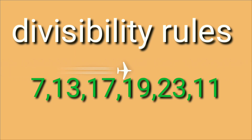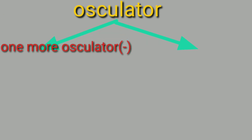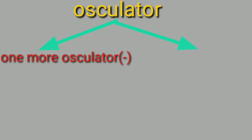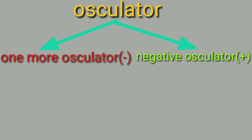We are going to discuss the terms. First of all, I will discuss the term and word. It is called Oscillator. Before getting into the topic, in this Oscillator there are two types: one-more Oscillator and negative Oscillator.